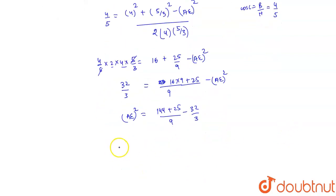Right now, our AE whole square is equal to 169 divided by 9 minus 32 by 3, and it is equal to, on taking LCM that is 9, it is 169 minus 32 multiply 3 is 96.